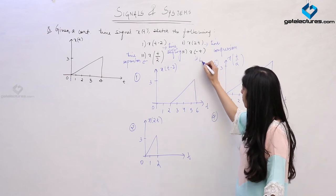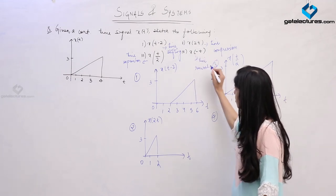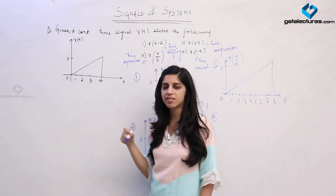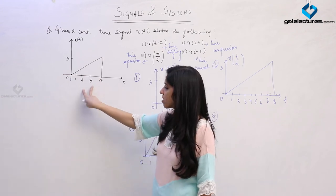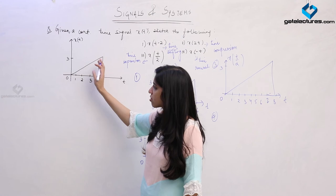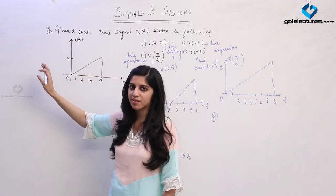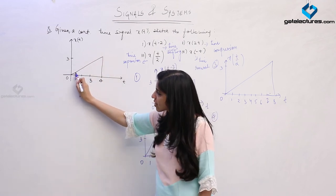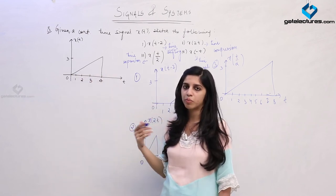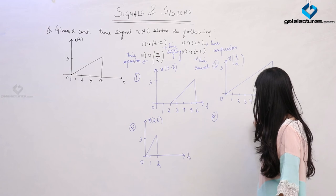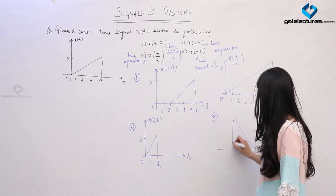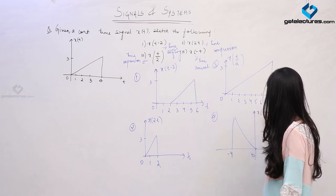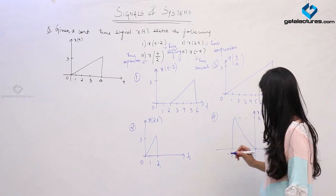This is just time reversal. What happens in time reversal is the value of the signal at t=1 is going to become the value of the signal at t=-1. The signal is going to have its mirror image across the y-axis — just the mirror image of this signal across the y-axis. The value of the signal at a positive time instance is now going to become the value of the signal at the negative time instance. We are just flipping the signal. This is how the time reversed signal is going to look.